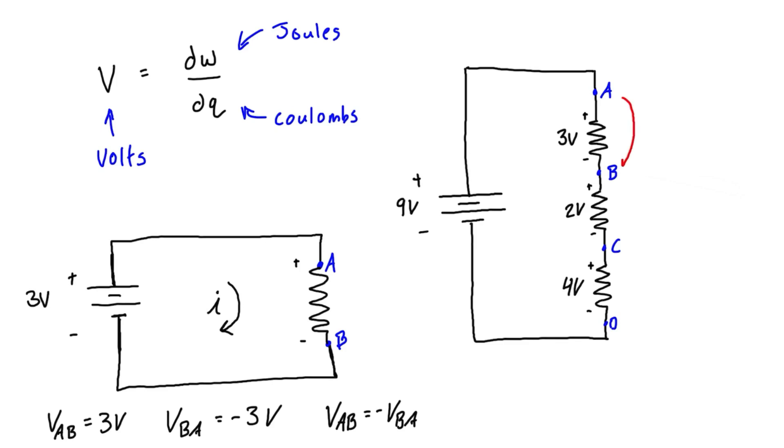If we want to check the voltage drop across each resistor, or between each of these points, the voltage drop from A to B is Vab = 3V. From B to C, Vbc = 2V. And from C to D, Vcd = 4V.